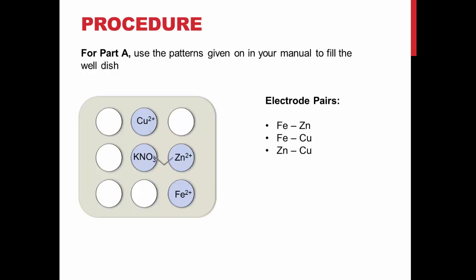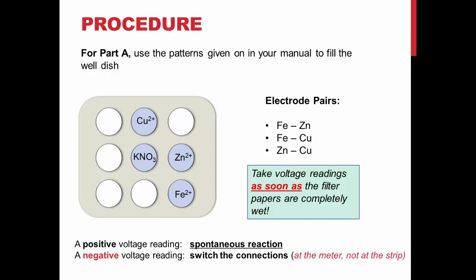Measure the voltages between the species shown with a voltmeter as soon as the filter paper is completely wet. A positive reading indicates a spontaneous reaction. If a reading is negative, switch the connections of the wires to the voltmeter.